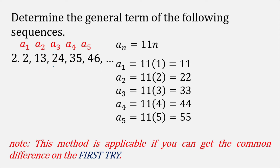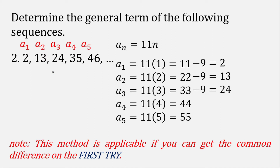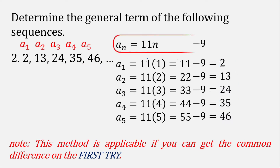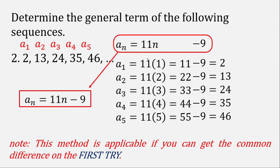What do we do to 11 to make it 2? We subtract 9. So 11 minus 9 is 2. Checking: 22 minus 9 is 13, 33 minus 9 is 24, 44 minus 9 is 35, 55 minus 9 is 46. We get the terms of our sequence, so we subtract 9 from the initial formula. The general term is a sub n = 11n - 9.